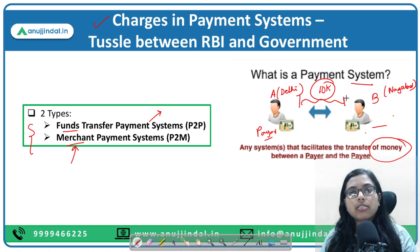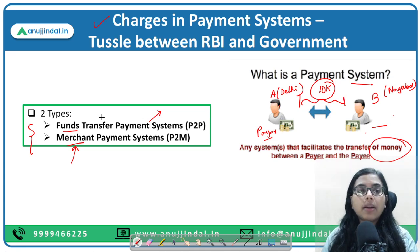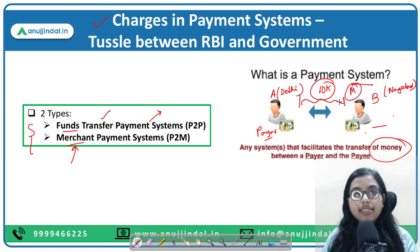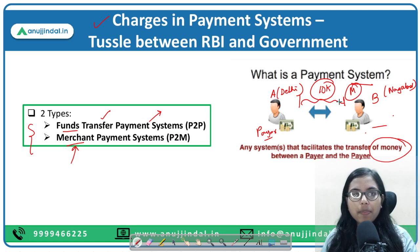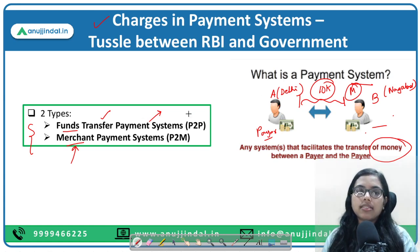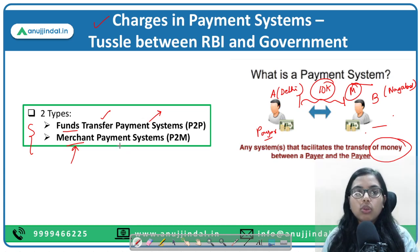All persons whom you know in reality and transfer money to come under the funds transfer payment system. In the merchant payment system, the receiver is the seller and you are giving or transferring money through the payment system — that comes under the merchant payment system, P2M. We have now discussed both types of payment systems.